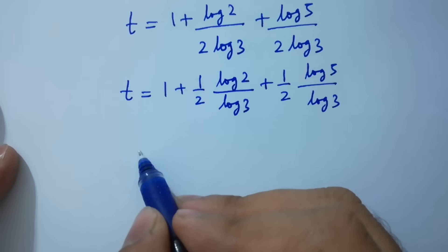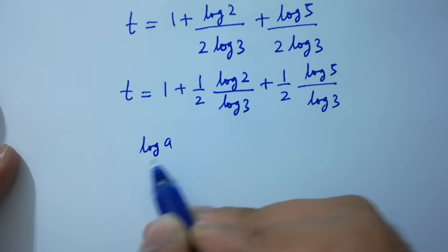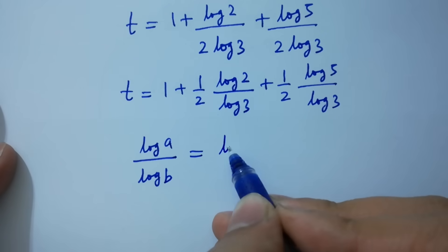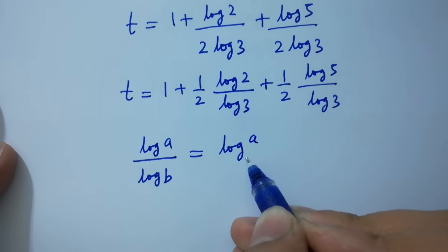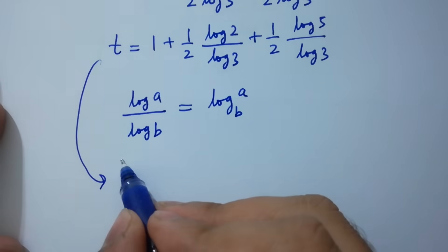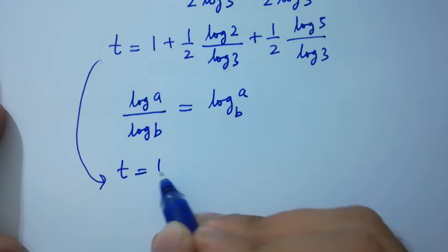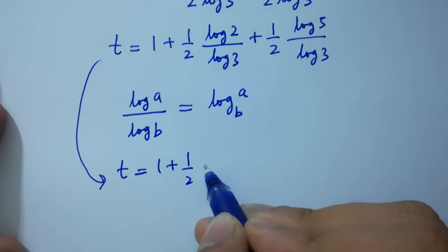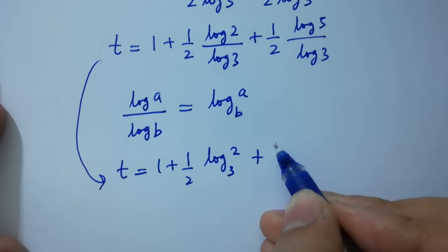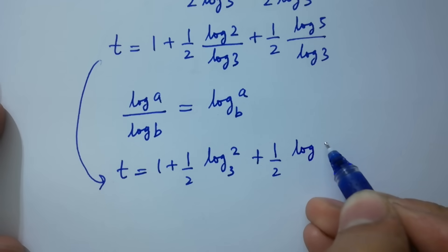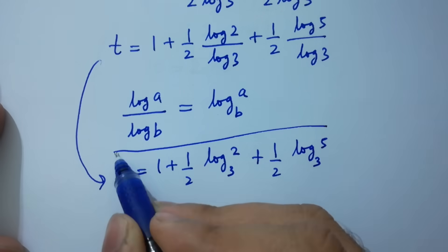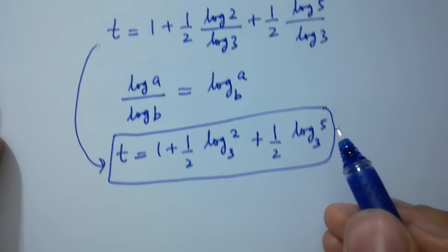As we know, log A over log B equals log A to the base B. Therefore t equals 1 plus one-half log 2 to the base 3 plus one-half log 5 to the base 3, which is the value of t.